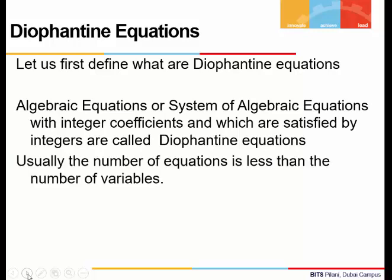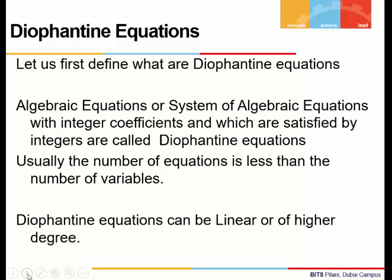Usually the number of equations is less than the number of variables. Diophantine equations can be linear or of higher degree and there can be any number of variables and any number of equations in a system.